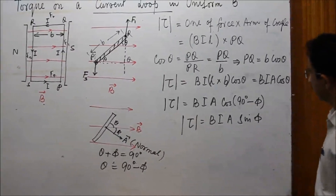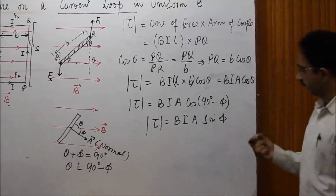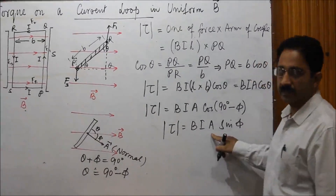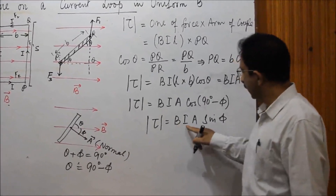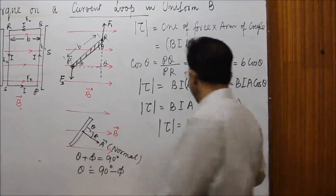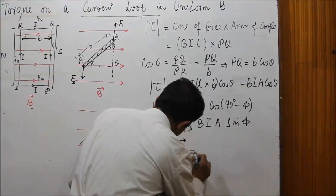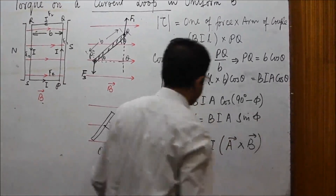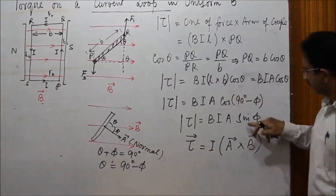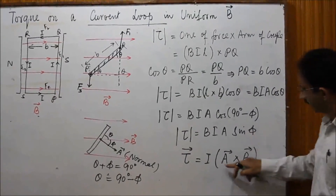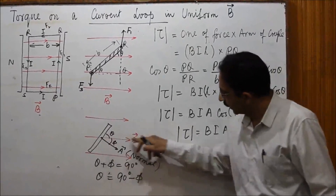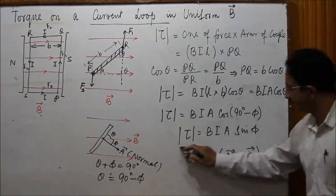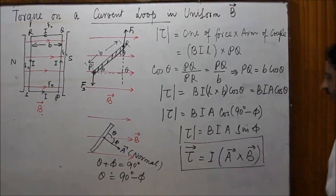Since torque is a vector quantity, we can write the complete vector definition using a cross product. The torque equals I multiplied by (A cross B), where A is the area vector and B is the magnetic field vector, and I (current) is a scalar. The cross product naturally contains the sinφ factor, since φ is the angle between the area vector and the magnetic field.